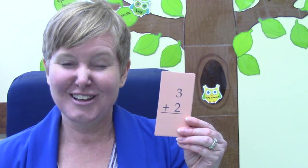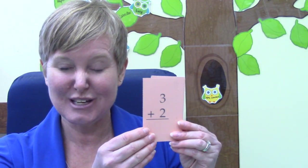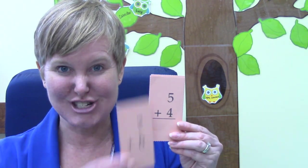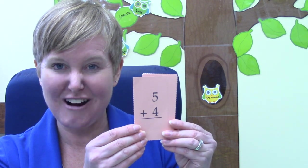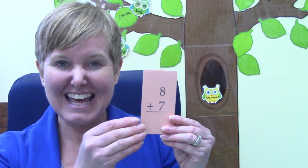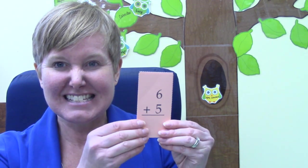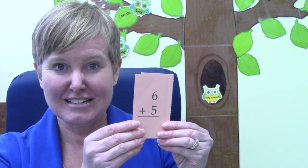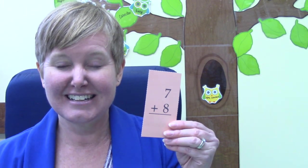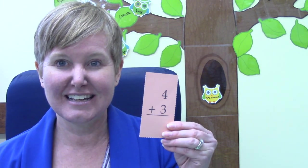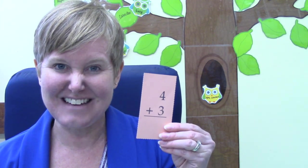Nine plus eight is seventeen. Three plus two is five. Seven plus six is thirteen. Five plus four is nine. Eight plus seven is fifteen. Six plus five is eleven. Seven plus eight is fifteen, and four plus three is seven.